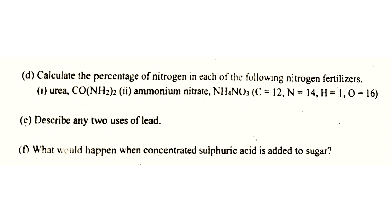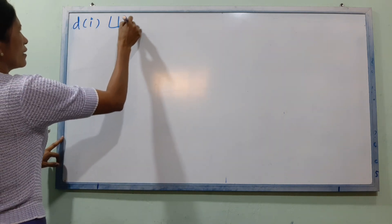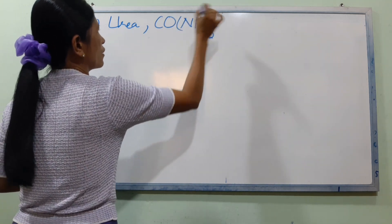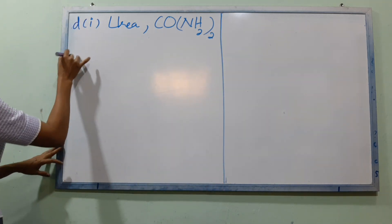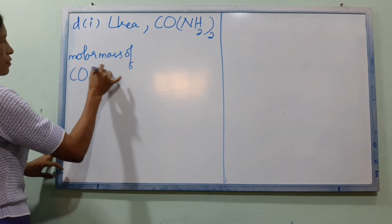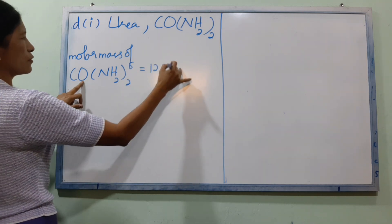Number D: Calculate the percentage of nitrogen in each of the following nitrogen fertilizers. The formula will be used. Number D, number 1: Urea. Urea formula is CO(NH₂)₂.